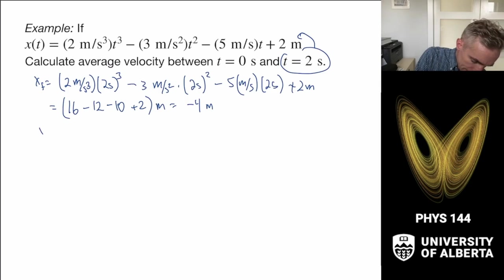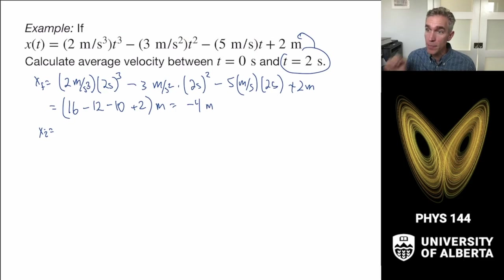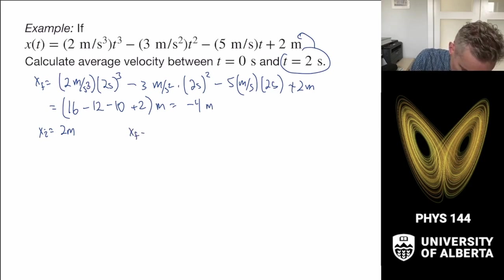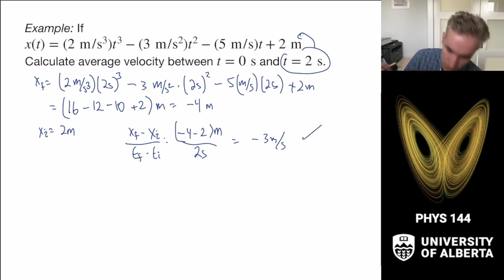That's how we would do this if we didn't have a graph — plugging in the two values, calculating x_final and x_initial from the function, and then dividing the displacement by the time interval. The result is −3 meters per second, consistent with what we read from the graph.